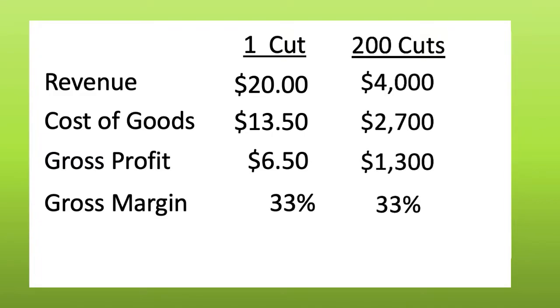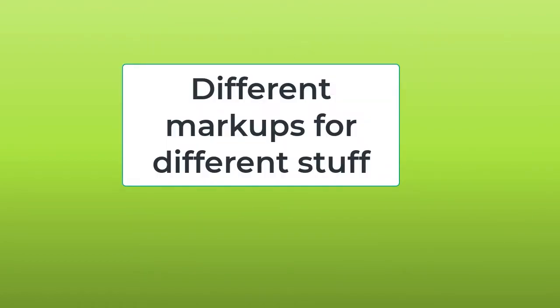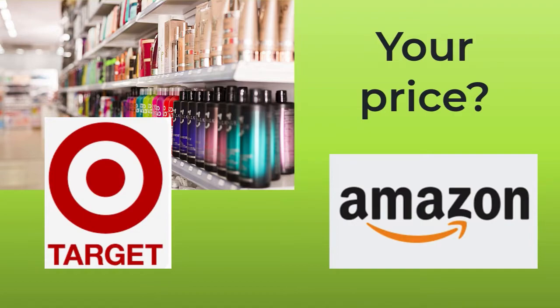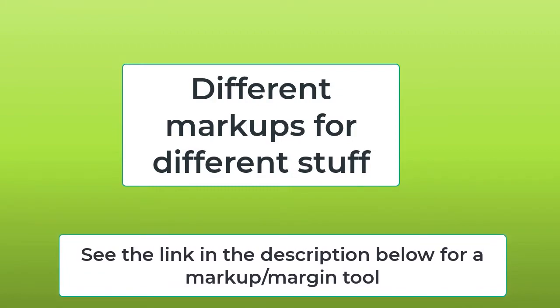If you were to sell the product separately from the service — which a lot of salons do — your markup might be different. In this product example, the salon is not selling a little bit to do one hair job; they are selling a whole container of product. Be aware that you may not have a standard markup for your various goods and services. When you sell a bottle of hair gel, the customer may be comparing your price to the price online or at their local Target store. This competition will likely cause you to keep your prices lower, so your gross margin and effective markup may be different from selling an individual item versus a packaged group of items and services.